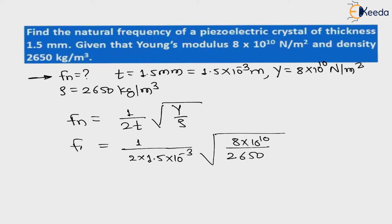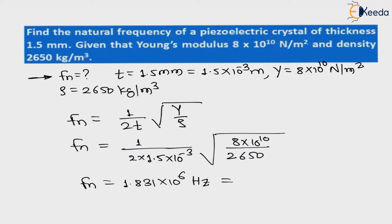Now let us solve this. After the calculation, we get the natural frequency of vibration fn = 1.831 × 10⁶ Hz. Frequency of vibration is always in hertz. Since it is 10 to the power 6, it is nothing but mega. Therefore the natural frequency of vibration is equal to 1.831 megahertz.